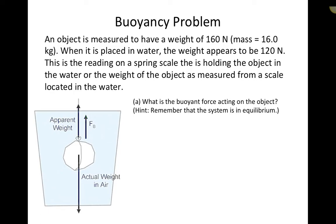In this example, we look at a problem that deals with buoyancy. We consider a situation where an object is placed in a fluid — in this case water — and we know information about its true weight. The object is measured to have a weight of 160 newtons when measured in air. When placed in water, it has an apparent weight of 120 newtons, due to the upward buoyant force exerted on any object submerged in a fluid.